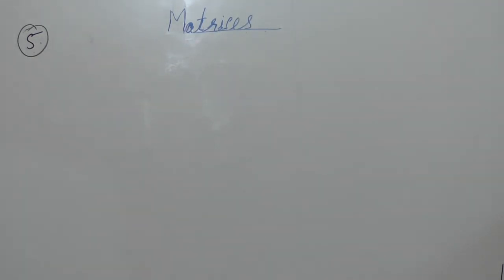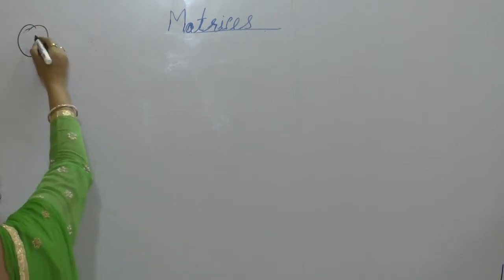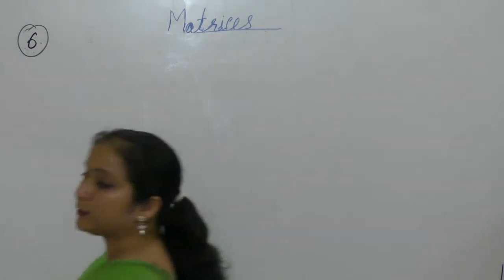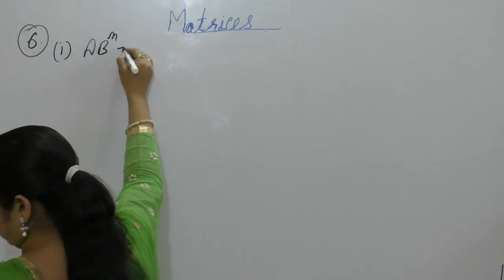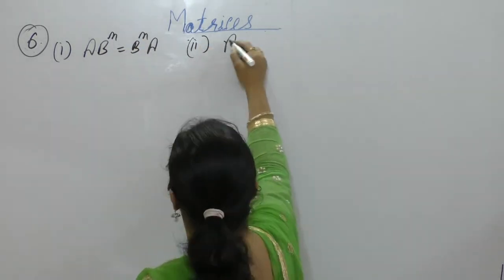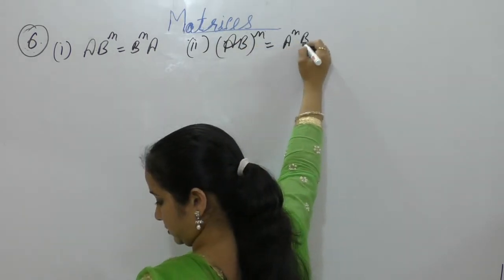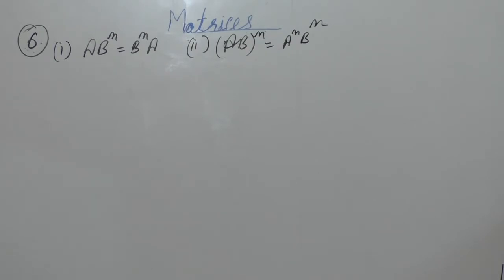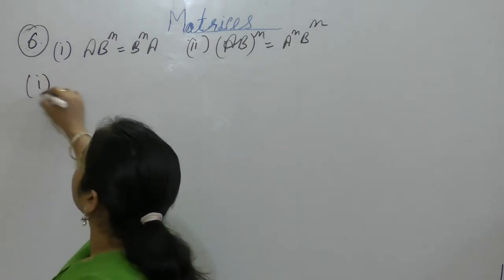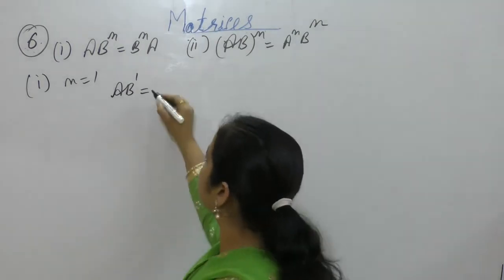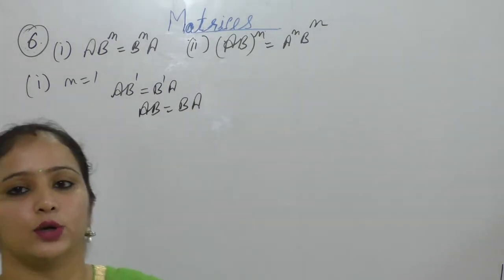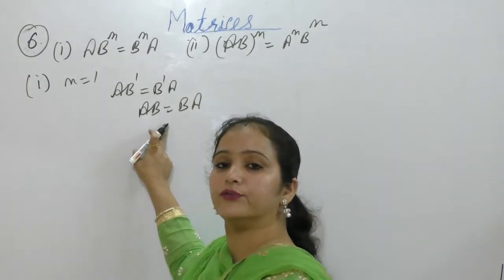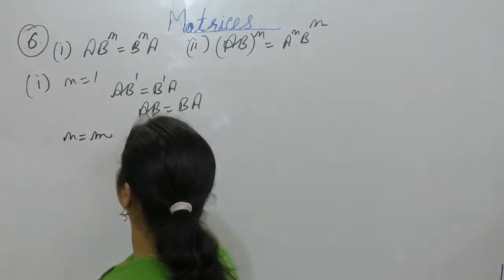Now the next thing is question number 6. Let A and B be two matrices such that they commute. Show that for any positive integer L. For the first part, put n equal to 1: AB^1 equals B^1·A, that is AB equals BA, given that A and B are matrices that commute. So the result is true for m equal to 1. Let us assume that result is true for m equal to m.